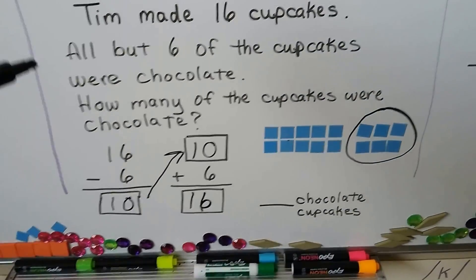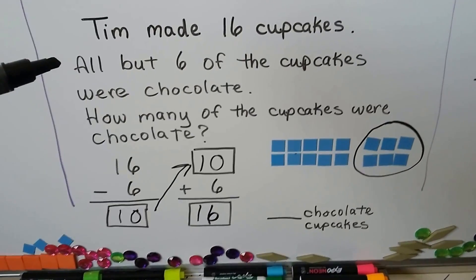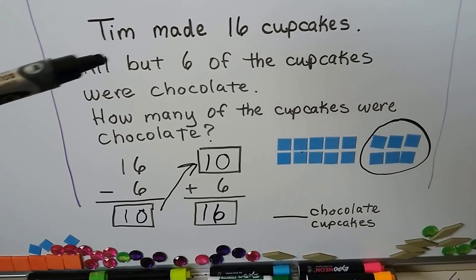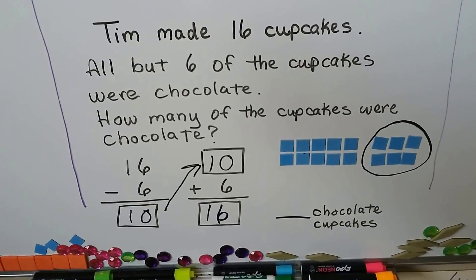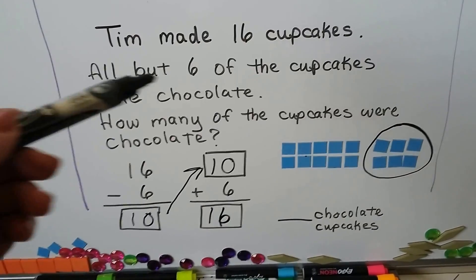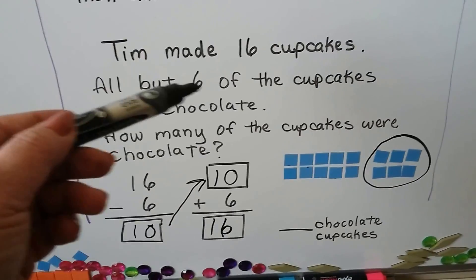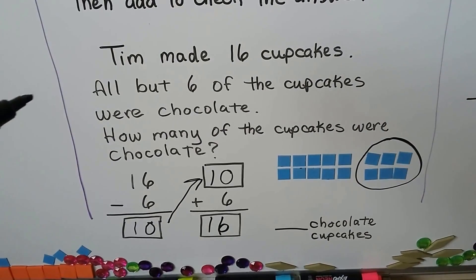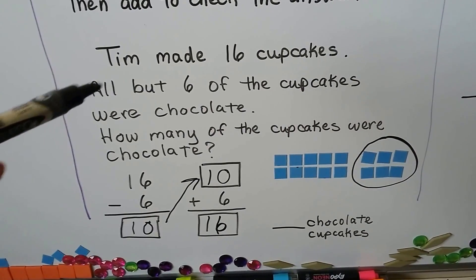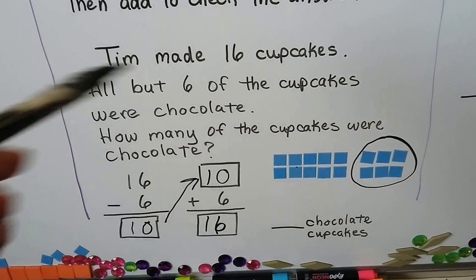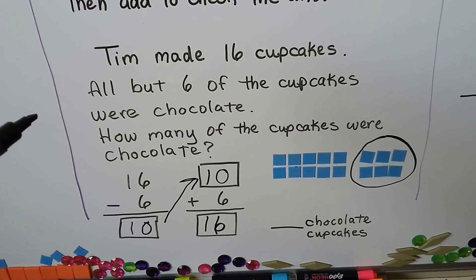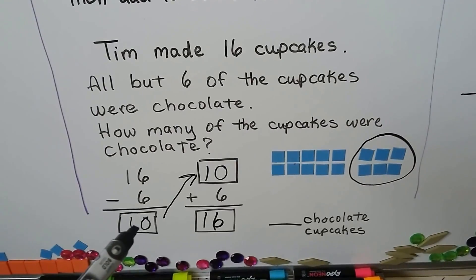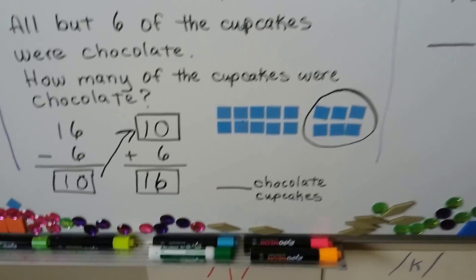It said all but six of the cupcakes were chocolate — so six could have been vanilla, strawberry, or some other flavor. All but six were chocolate, so that means ten were chocolate.